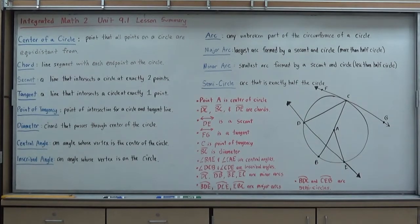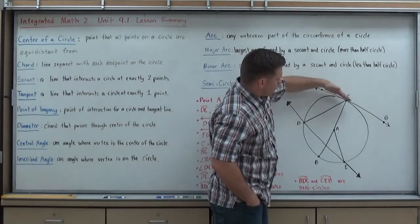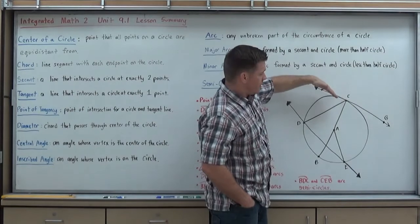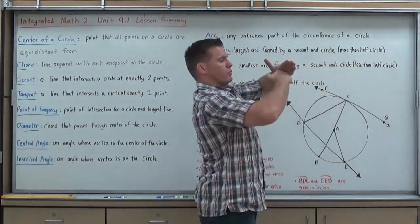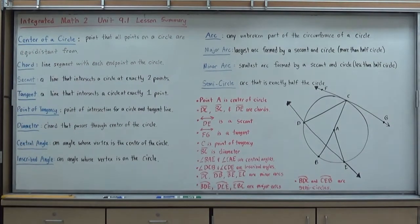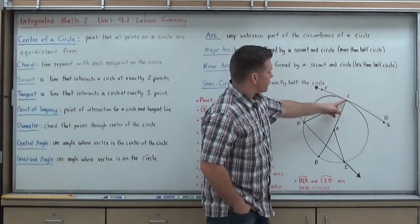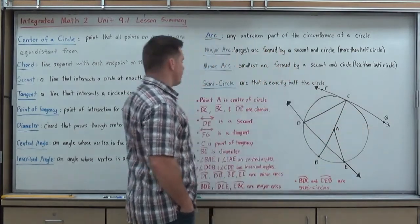A tangent is a line that intersects the circle at exactly one point. It comes in real close, skins the edge of the circle at exactly one single point, and extends on. Really just kind of, your circle kind of lays against that line, that's how you can think of that. So FG in my diagram is a tangent, and the point of tangency, which is the point of intersection for a circle and tangent line, is where that tangent line crosses the circle. So point C in my diagram is a point of tangency for the tangent line FG.